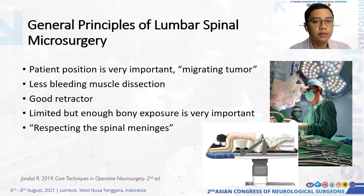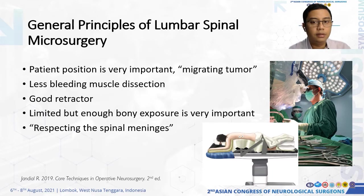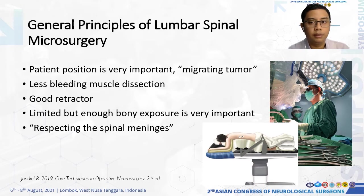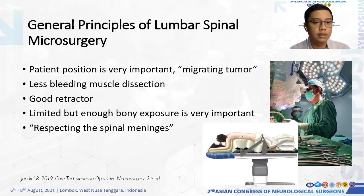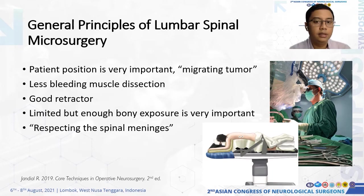Moving to our main topic — the general principles of lumbar spinal microsurgery. Patient positioning is very important, especially for small tumors that can migrate. We start the operation with less bleeding muscle dissection, to keep the operative field clean from beginning to end. A good retractor is very important to minimize your skin incision. Limited but adequate bone exposure is key — in the literature, 1 cm rostral and caudal to the tumor is considered enough. Respecting the spinal meninges is the key point of this presentation.